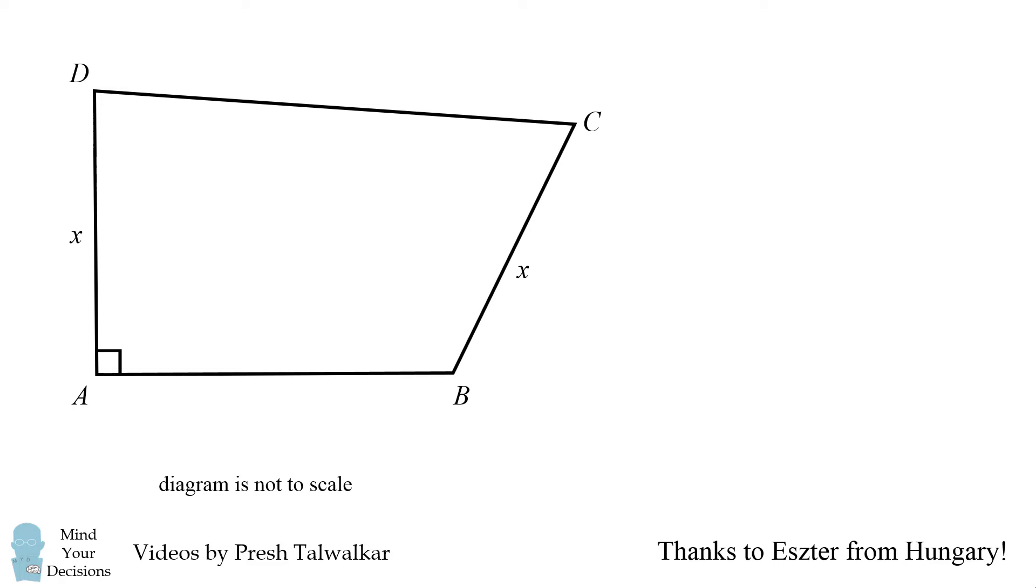Let angle A be 90 degrees and let angle B be 100 degrees. Now draw perpendicular bisectors for sides AB and CD and mark the intersection point as E.